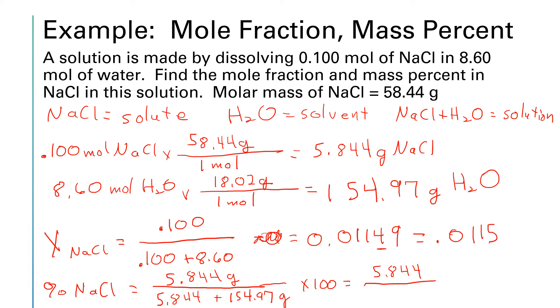5.844 plus 154.97 gives me 160.814. So if I divide 5.844 by 160.814 times 100, I get 3.63%.